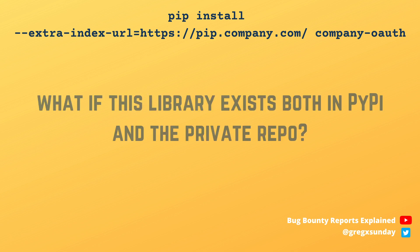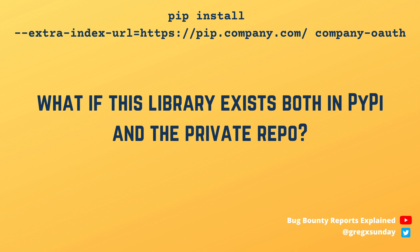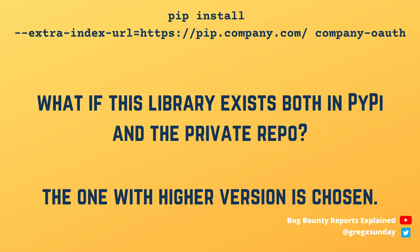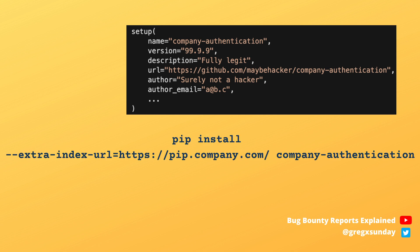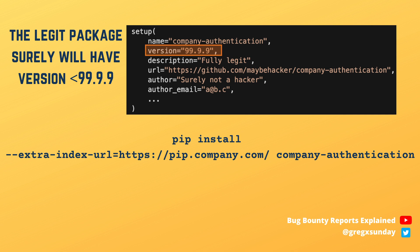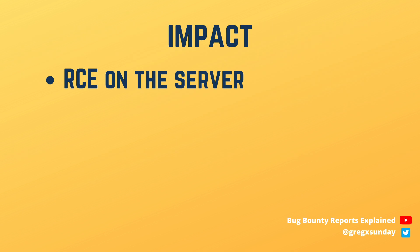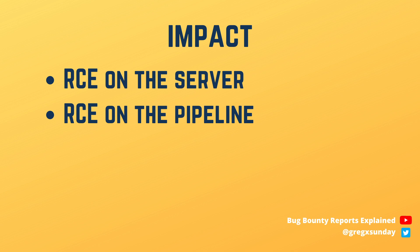The question is: what would happen if both the public and the private repository had the dependency you want to install? My logic would suggest that the package from the private repository would have higher priority, but it's not the case. It turns out that pip chooses the library with the higher version. And importantly, when publishing a new package, a user can specify any version they want. So if a company uses a private Python library called company-authentication, anyone can go to PyPI, create a public package with that name, and when someone in the company runs the install command, the one created by a malicious user from the public repository will be downloaded because it has a higher version. You then gain RCE on servers, on CI/CD pipelines, and even on developer PCs.